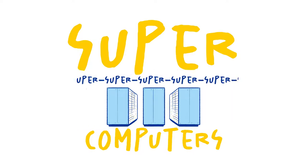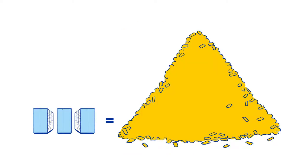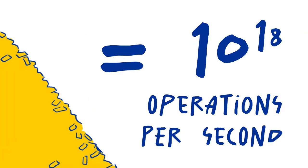Supercomputers can process mind-boggling amounts of data. They'll soon reach the computing power of all mobile phones across the EU taken together. Hey! My phone! That's 10 to the power of 18 operations per seconds, the so-called exascale.